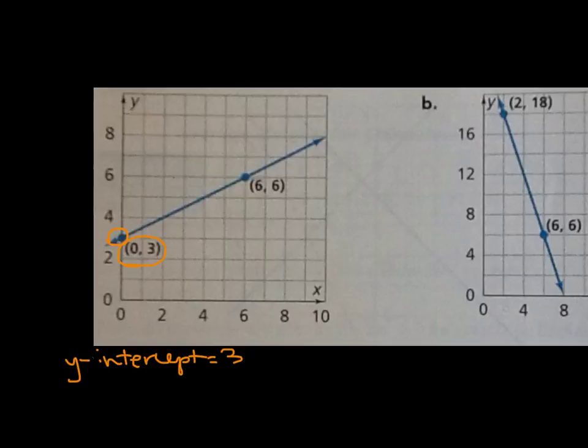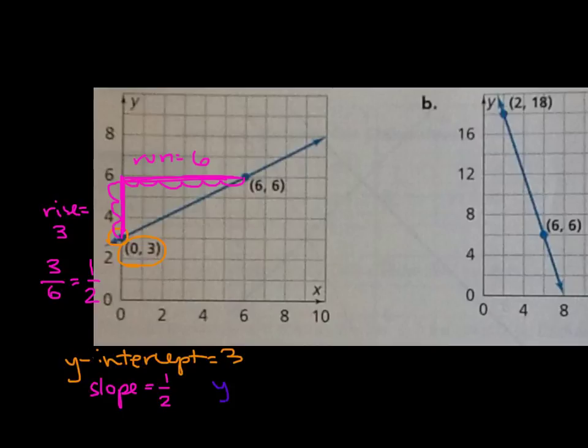Now let's look at our rise over our run. It looks like our rise is right here. Rise is equal to 3. There's a change in 1, 2, 3 units. And our run, in this case, is a change of 1, 2, 3, 4, 5, 6 units. So rise over run means 3 over 6, which can be simplified to 1 half. So our slope is equal to 1 half. So we can create the equation y is equal to 1 half x plus 3.